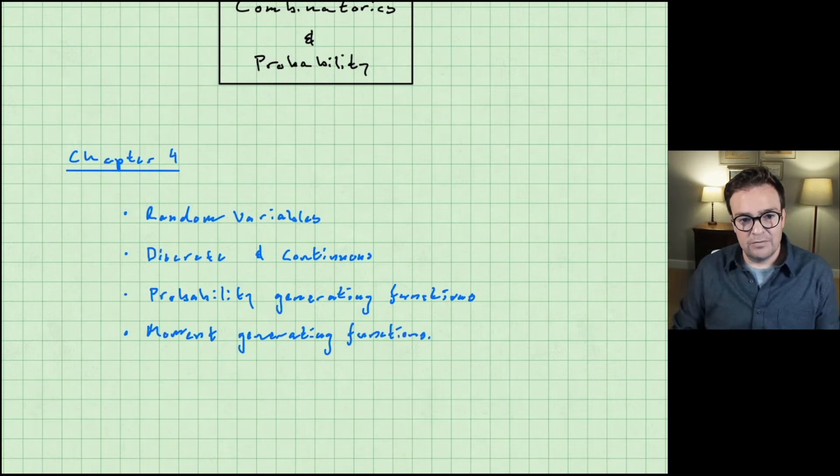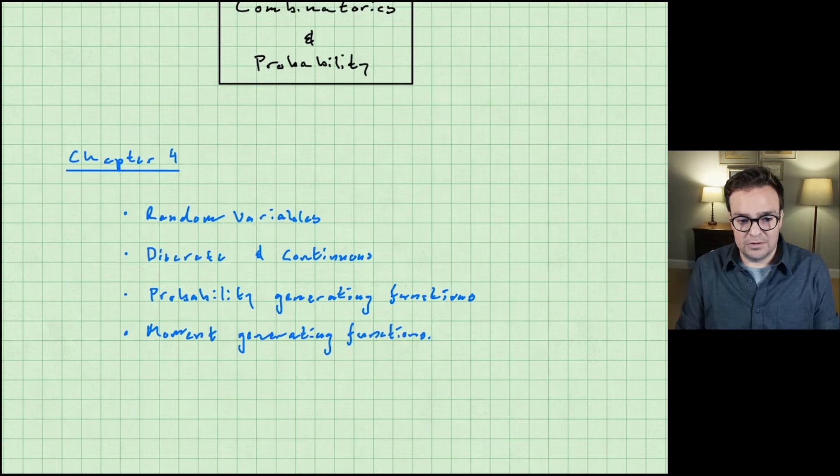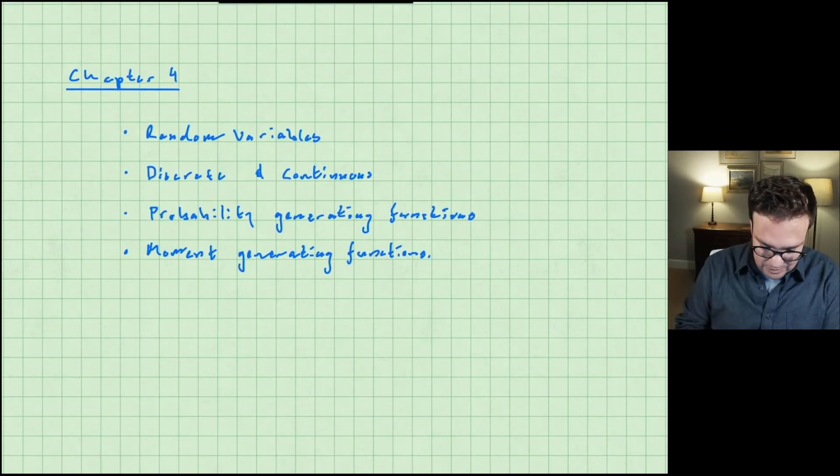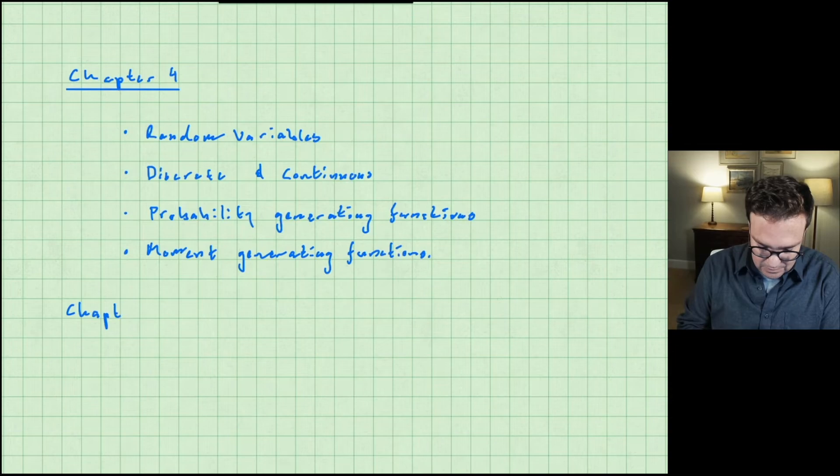We'll spend a fair amount of time talking about this chapter of the notes. After this chapter we're going to start talking about bivariate distributions. That'll be chapter 5 and our last chapter of the class.